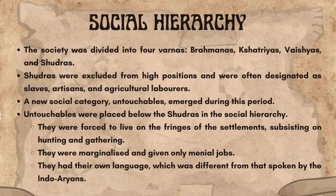The society was divided into four Varnas: Brahmanas, Kshatriyas, Vaishyas, and Shudras. Shudras were excluded from high positions and were often designated as slaves, artisans, and agricultural laborers.